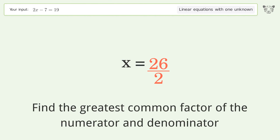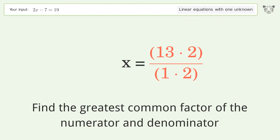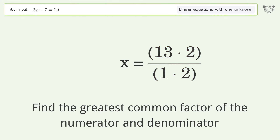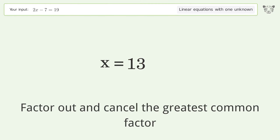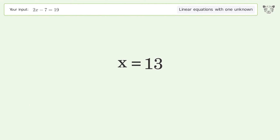Find the greatest common factor of the numerator and denominator, then factor out and cancel the greatest common factor. And so the final result is x equals 13.